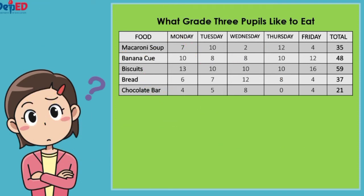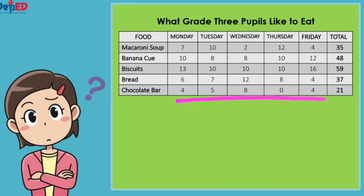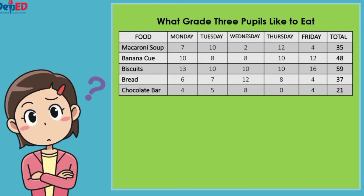Look into the table presented. The first column shows the different food from the school canteen. The second, third, fourth, fifth, and sixth columns show the number of pupils who buy food every day. While the last column shows the total number of pupils who buy food.